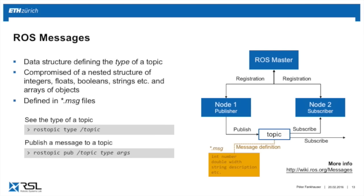If you have a topic and need to know its type, type rostopic type and then the topic name. If you need to publish on a topic from the console — for example if there's a subscriber but no publisher node yet — you can use rostopic pub, then the topic name, then the type. Using the tab key auto-completes the message structure so you can fill in arguments easily.